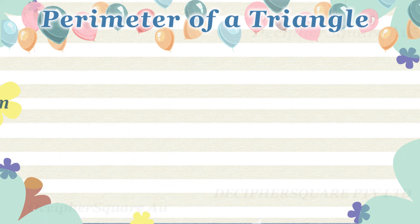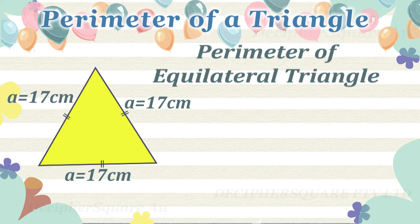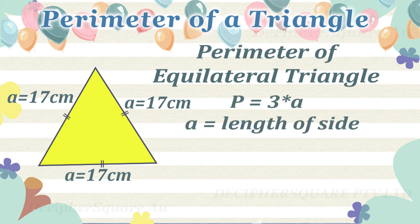Here is an example of an equilateral triangle. What is the perimeter of this equilateral triangle? The perimeter of an equilateral triangle equals three times the length of each side. The formula for the perimeter of an equilateral triangle is as shown.